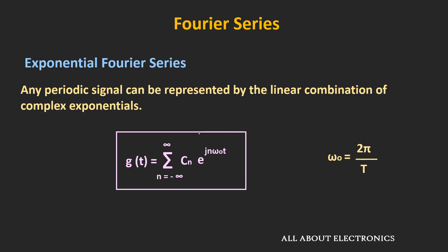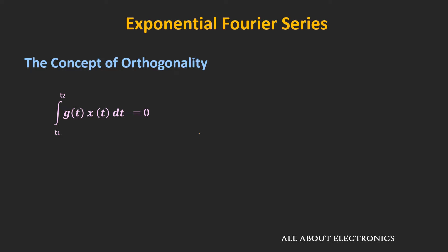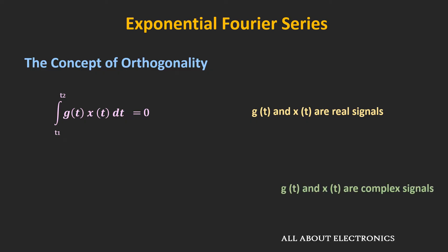For this representation to be valid, these complex exponentials have to be orthogonal signals. Recalling from the previous video, two signals are orthogonal if a certain condition is satisfied. For real signals g and x, one condition applies; but if the signals are complex, they are orthogonal when their product with the complex conjugate of the other signal, integrated over a finite time, equals zero.